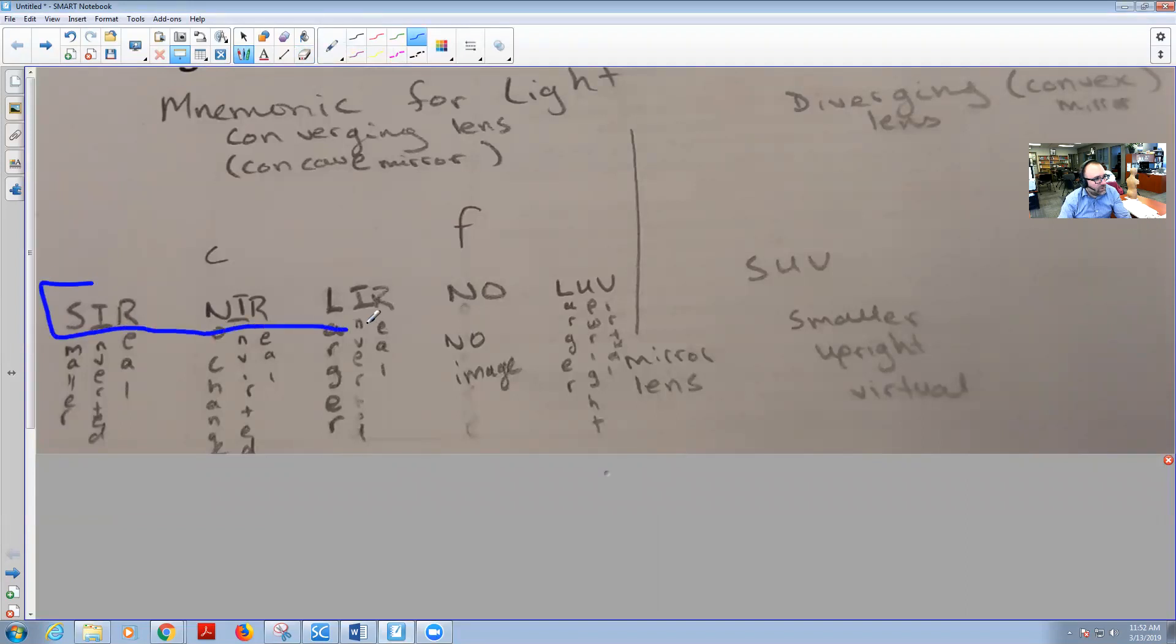Sir, ner, ler, no, love, SUV. Okay, first things first, what does the C stand for? This means center. So this is the center of the image from the focal point. So here's the F for it.